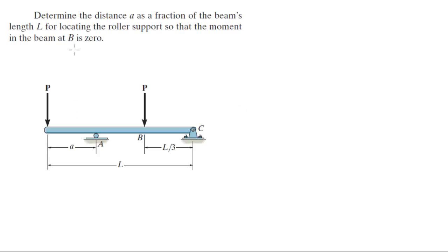For more videos visit ForTheSakeOfEducation.com. Alright guys, let's do this problem that says determine the distance A as a fraction of the beam length for locating the roller support so that the moment in the beam at B is zero.